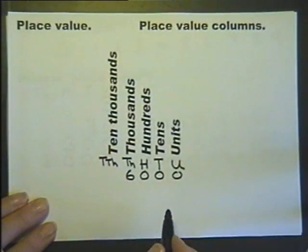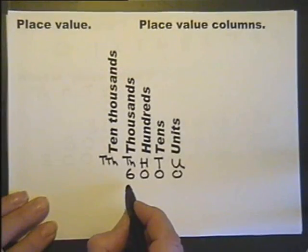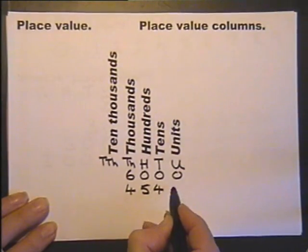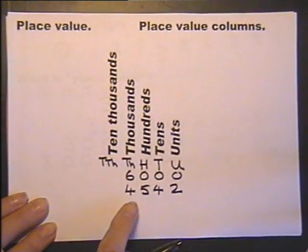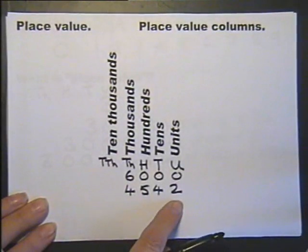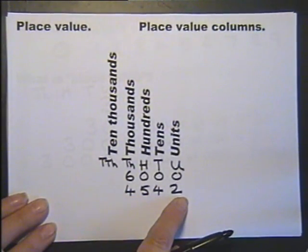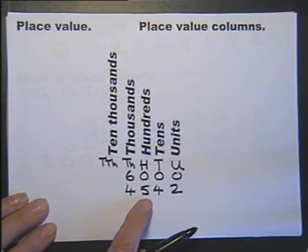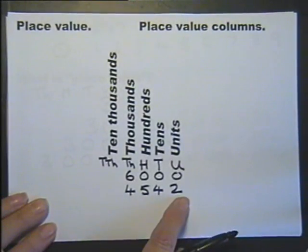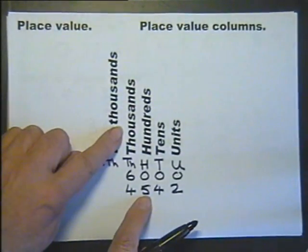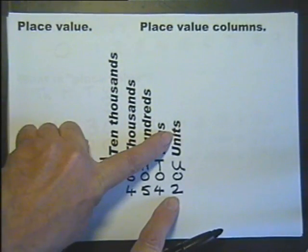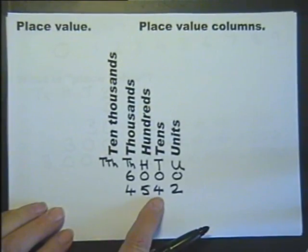Let's put some other digits underneath. Let's put these digits: 4, 5, 4, and 2. Now these digits, 4, 5, 4, and 2, make a number. And this number we need to be able to read. And we read it by looking at the columns that each of the digits are under. So this number will be 4542.